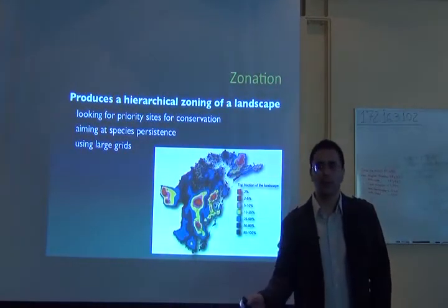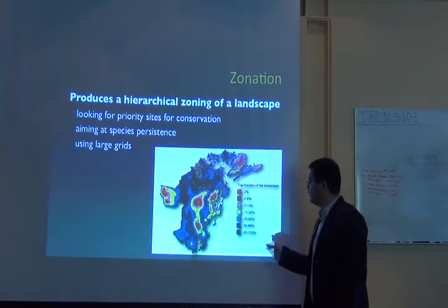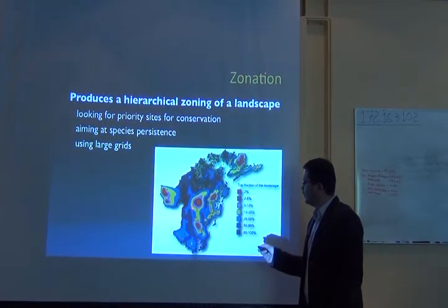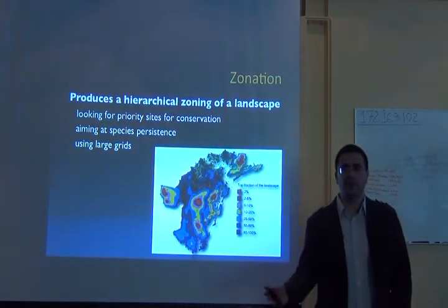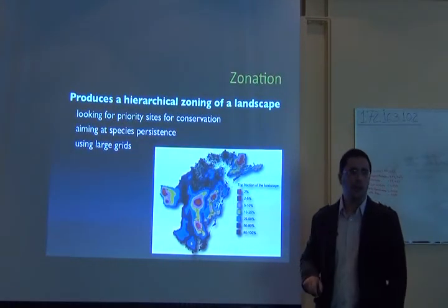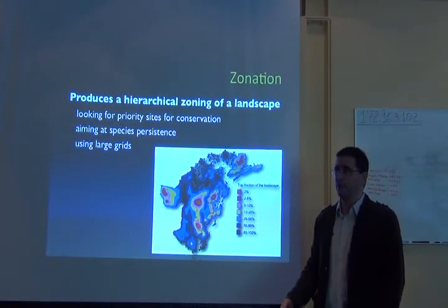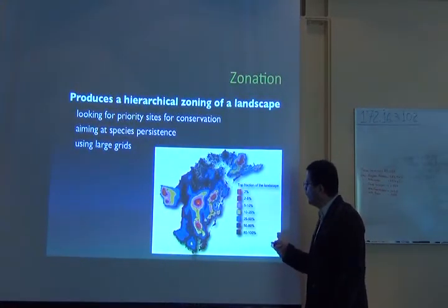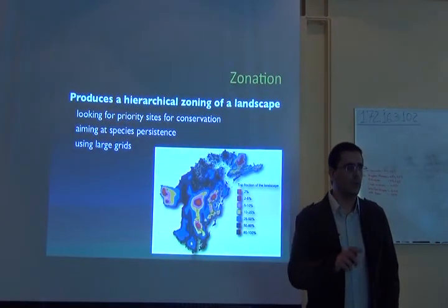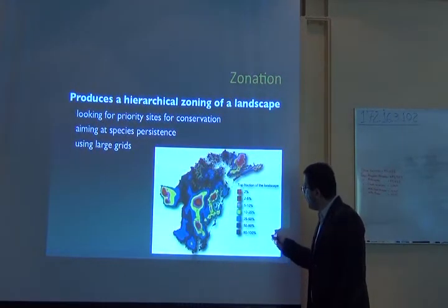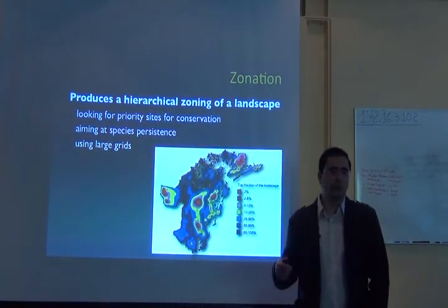You don't necessarily have 'this is priority, this is not priority.' What it gives you is: this place is top priority, then this is priority, and this is less priority, and this is no priority. You have a surface of priority with some kind of rank. The top fraction of the landscape gives you the most beneficial, the greatest return in conservation. So if you were to protect 2% of this region, you should go to the red places. If you want to protect 25% of the region, then it should go from red to yellow, and that will sum up 25% of the region.